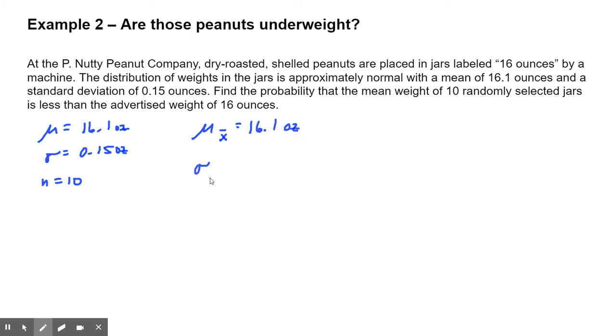The standard deviation of the sampling distribution for x-bar equals the population standard deviation divided by the square root of 10. I'll do that on my calculator. 0.15 divided by the square root of 10. I got 0.0474 ounces.